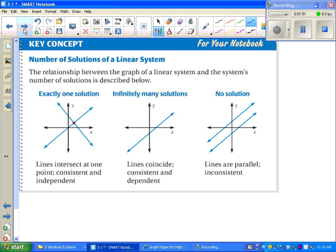Next, we've got some vocabulary to look at. When two lines cross and meet at a specific point, we say there's one solution, and we say these are consistent and independent. Independent means only one solution. Consistent means that there is a solution.